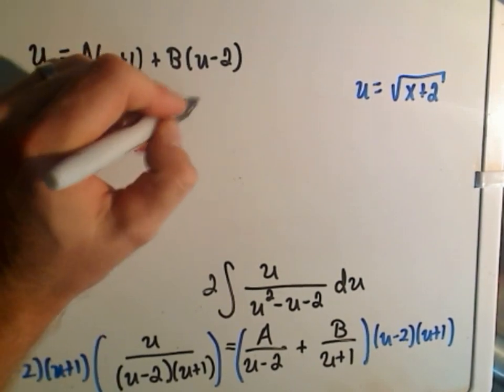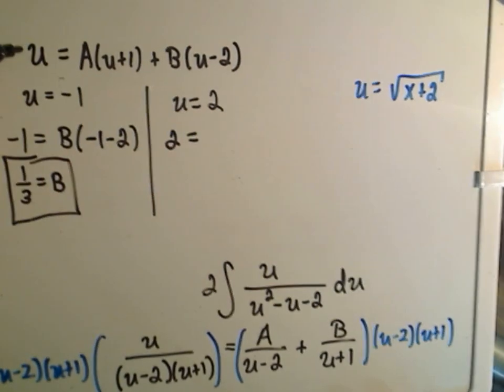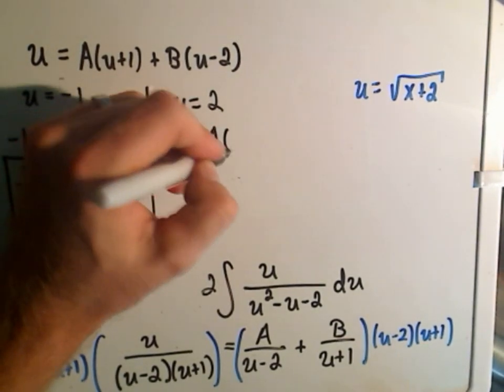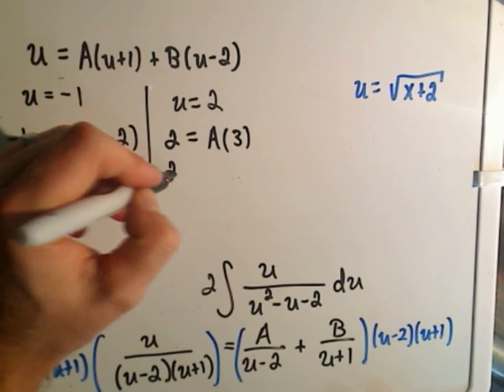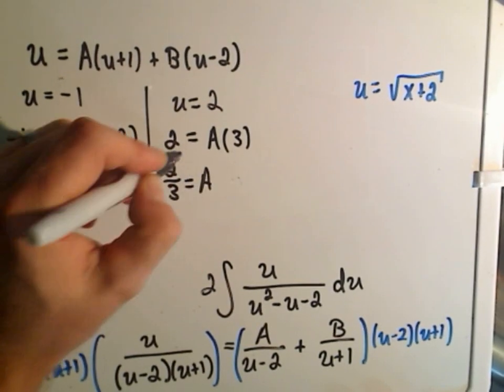Likewise, I can plug in u equals 2. On the left side I'll get 2. On the right side I'll get 2 plus 1 or 3, and so I'll get A equals 2 thirds.